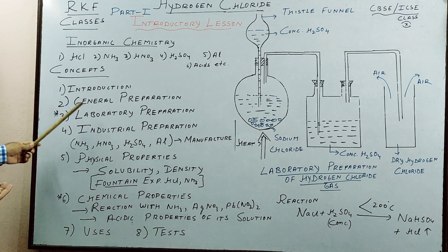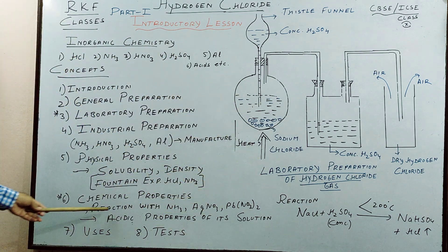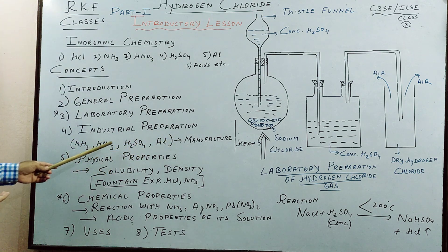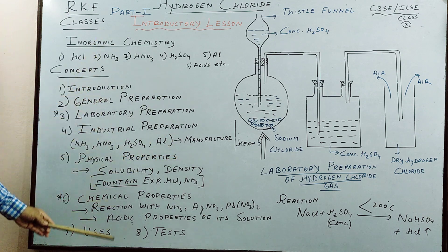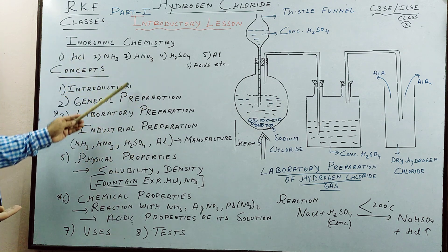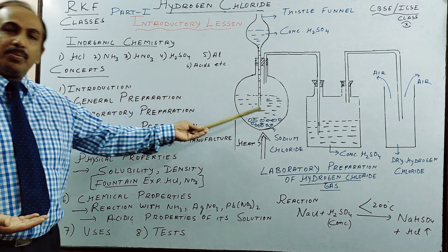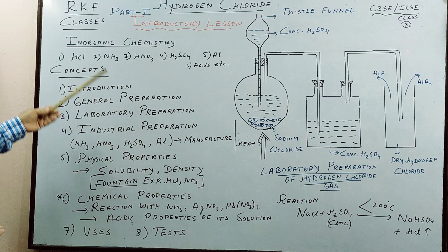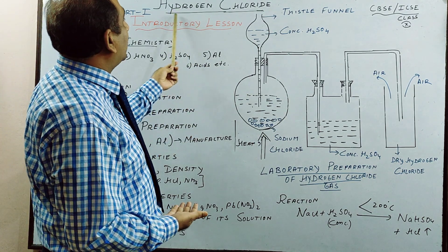Your main things in this chapter are laboratory preparation under various conditions and chemical properties. Sometimes industrial preparation, which we will see in detail when we come to it. This is the overall view of the topic we will be doing. Every time I will start with a little introduction and laboratory preparation. This is our general pattern which we will follow. Now, first topic today is hydrogen chloride.